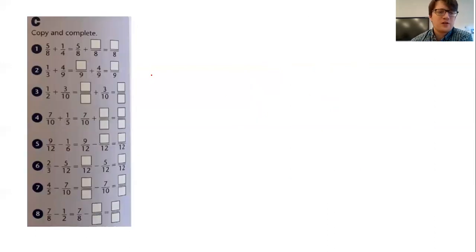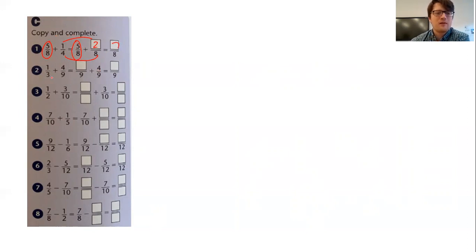So if we look at these questions, they've been set out to help you with the steps. You can see five eighths stays as it is, but the quarter has been turned into eighths. To go from four to eight, times by two — do the same at the top — so it's now five eighths add two eighths; add those together, you get seven eighths. Here, the four ninths: nine is going to be the lowest common denominator. Three to nine, times by three — do the same up here, times by three — three ninths and four ninths: seven ninths.